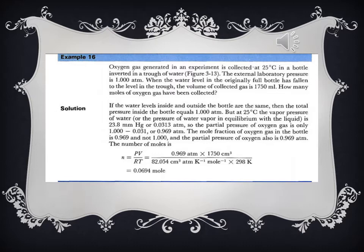Oxygen gas generated in an experiment is collected at 25 degrees Celsius in a bottle inverted in a trough of water. The external laboratory pressure is 1.0 atm. When the water level in the originally full bottle has fallen to the level in the trough, the volume of the collected gas is 1,750 milliliters. How many moles of oxygen gas have been collected?